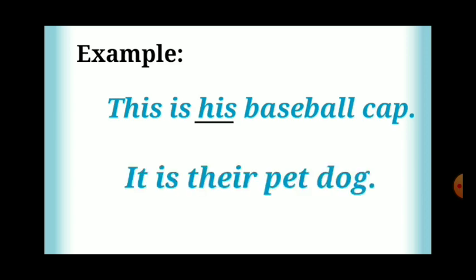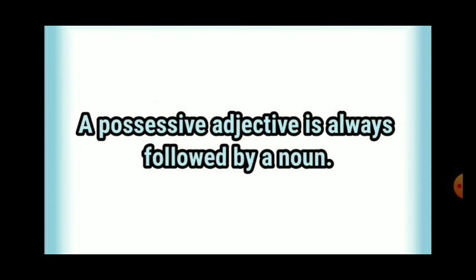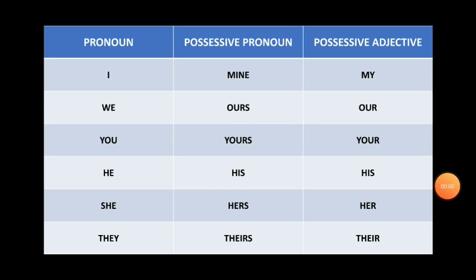We can also say the possessive adjective 'his' shows who owns the noun 'baseball cap.' Let us look at another example: 'It is their pet dog.' Here, 'their' is a possessive adjective as it shows ownership for the noun phrase 'pet dog.' What is important to keep in mind is that a possessive adjective is always followed by a noun.